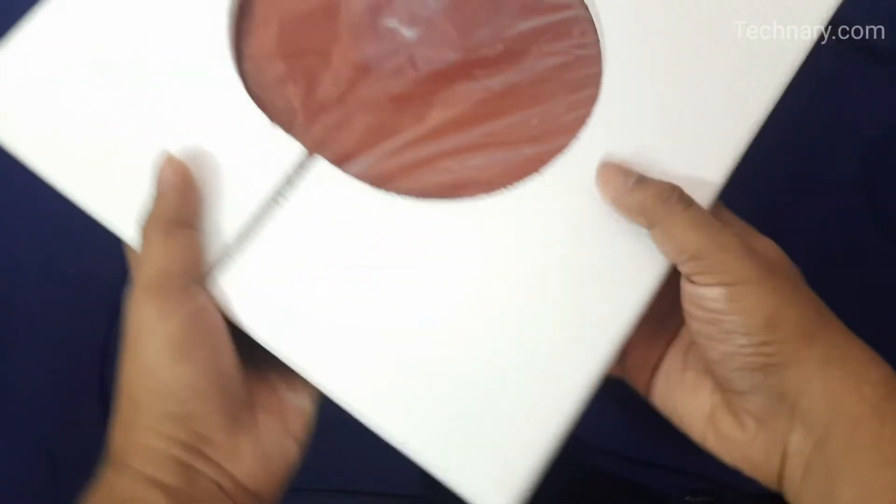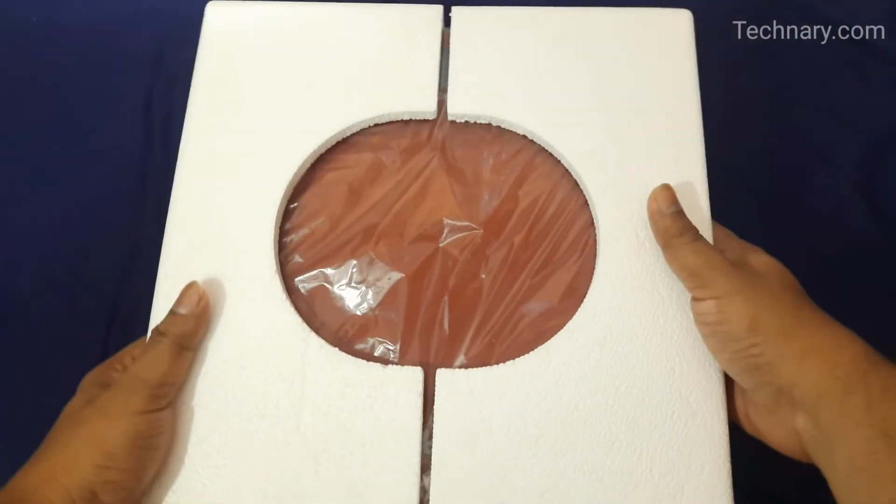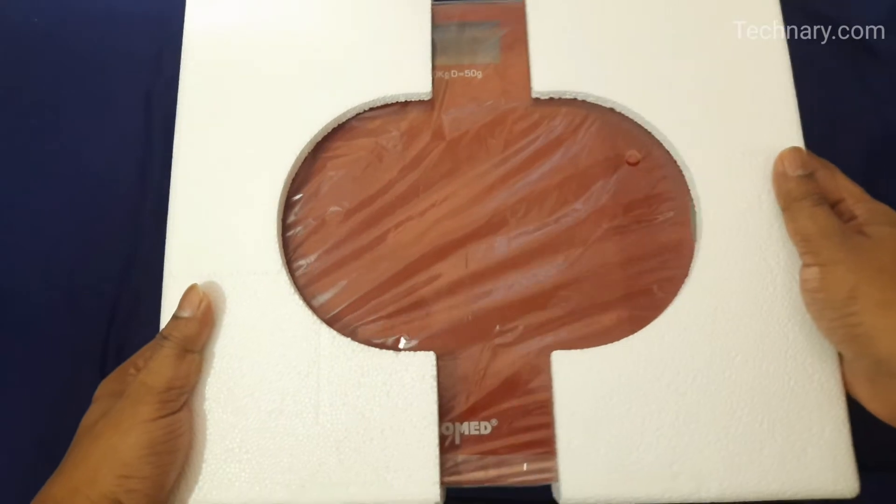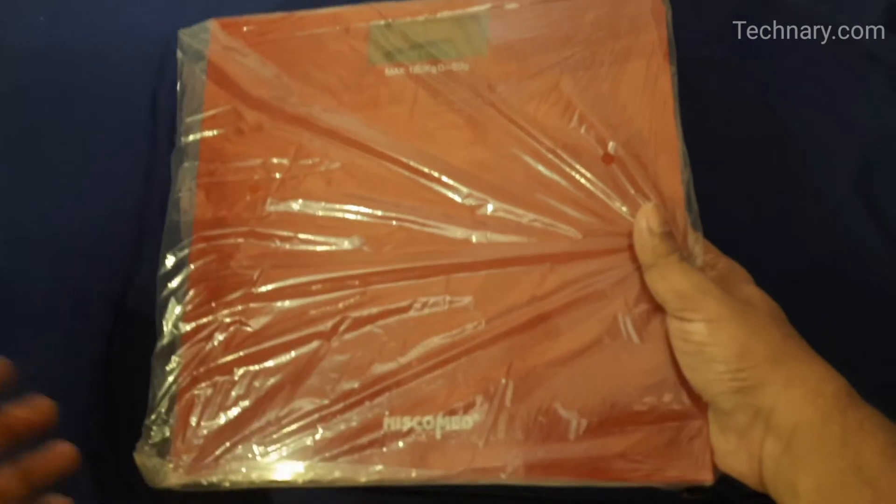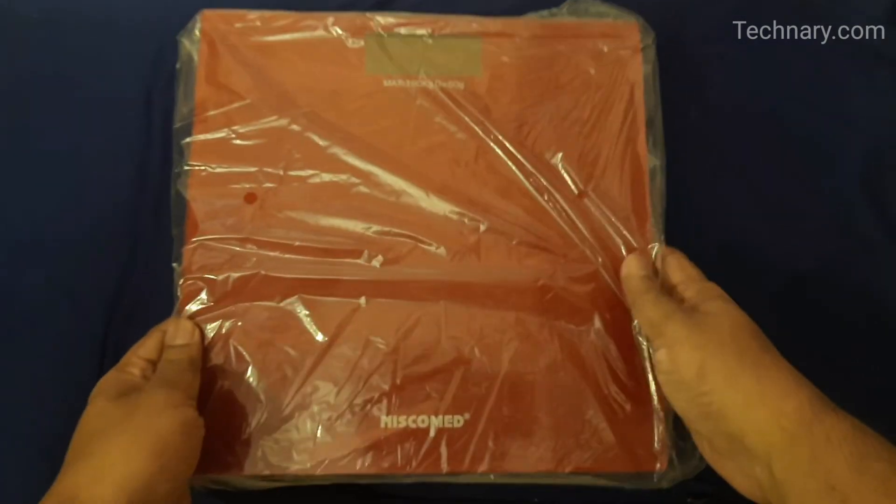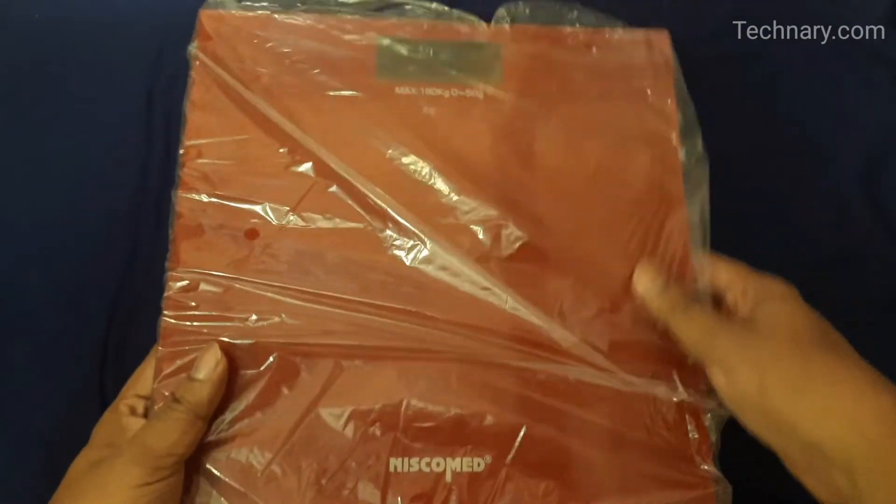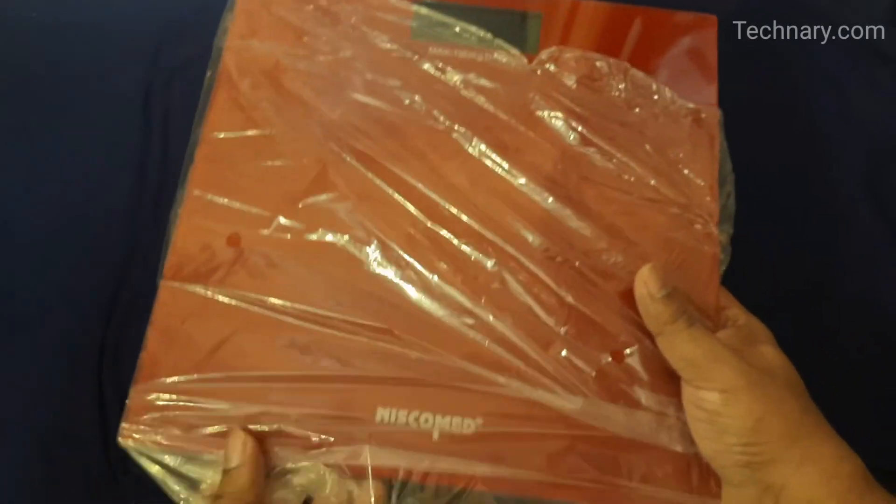This is the product itself which is the personal digital scale. This body scale is equipped with a high precise strain gauge sensor system, tempered safety glass platform and the capacity is 180 kg that is 396 LB or 25 stone.